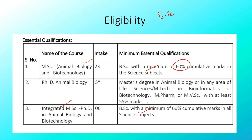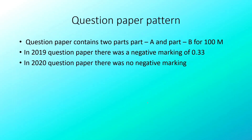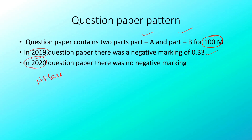Regarding the Question Paper Pattern: the question paper is divided into Part A and Part B for 100 marks. There is negative marking — 1 wrong question deducts 0.33 marks. Note that the 2019 question paper had negative marking, but the 2020 question paper did not have negative marking.